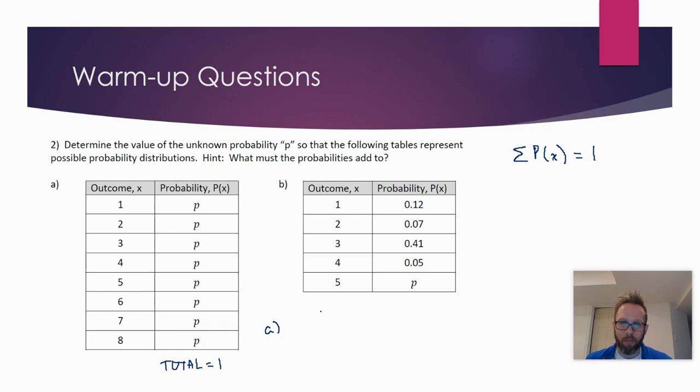And if you add them all up, there are eight of them, 8P, and they have to add to one. And if you solve for P divided by 8, that means that each of those probabilities has to be one over eight, which makes perfect sense. The distribution in A is a uniform distribution. All the probabilities are the same. If there's eight outcomes, each of them must be one eighth, or as a decimal, 0.125.